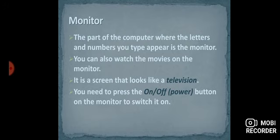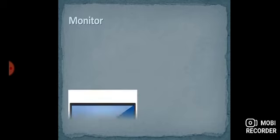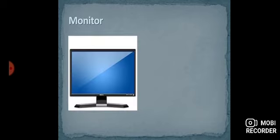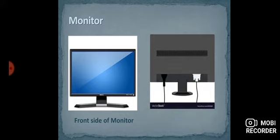You need to press the on or off power button on the monitor to switch it on. Next we have the pictures for the front side of the monitor and then we have the picture for the back side of the monitor. You can see this is the front side monitor and this is back side.